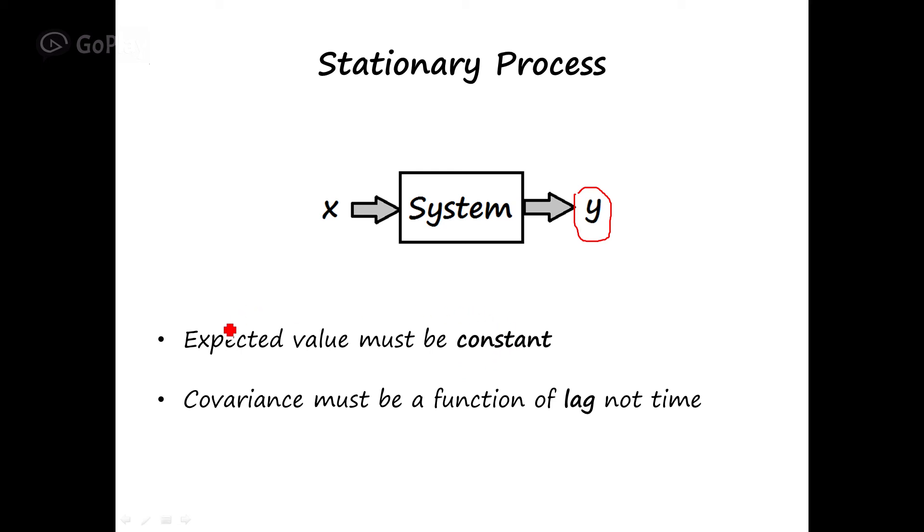The first condition means you have a signal like this, just intuitively. As you can see, it goes up and down, but the mean is always constant, around zero.